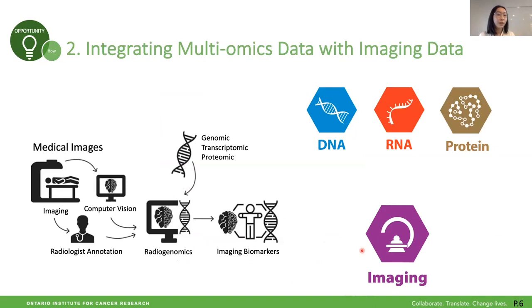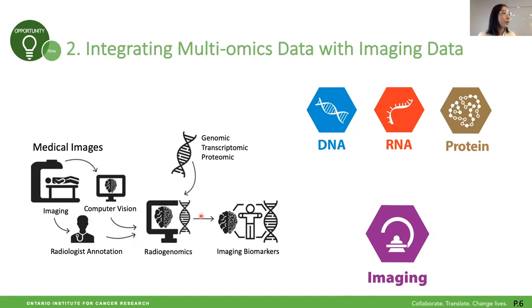Moving to the second aim, which is trying to integrate multiomics data with imaging data — that's what we call radiogenomics. Radiogenomics is a relatively new field. The figure on the left shows a common work pipeline: on one hand we have imaging data, on the other we have molecular profiling data. Radiogenomics combines these two levels of data to make meaningful conclusions using different computational algorithms.